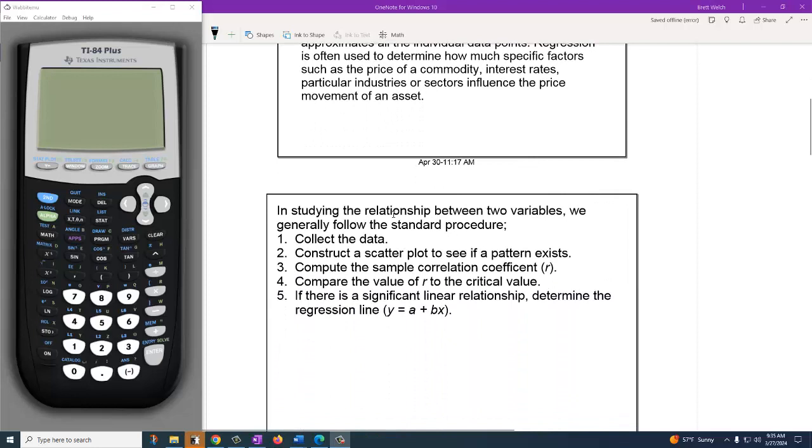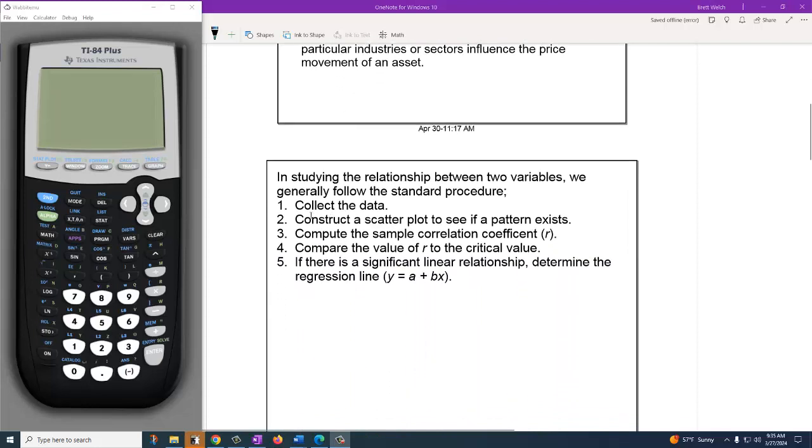And the way that we're going to do that is always by doing this following process: collecting data, which is typically already done in the textbook questions and in test questions, but that's what we would go out and do. First, we've got to collect some data, constructing a scatterplot to see if a pattern exists. If it looks really random, we're probably not even going to go forward from there.